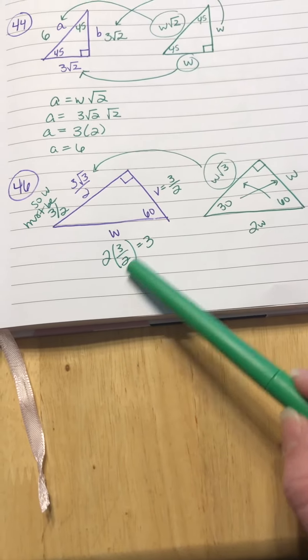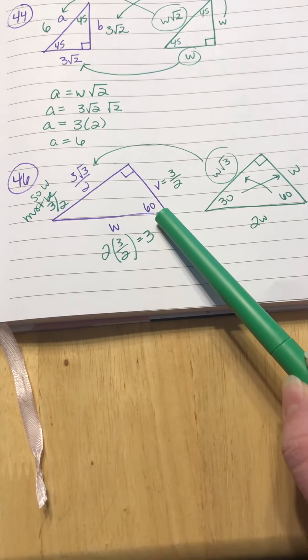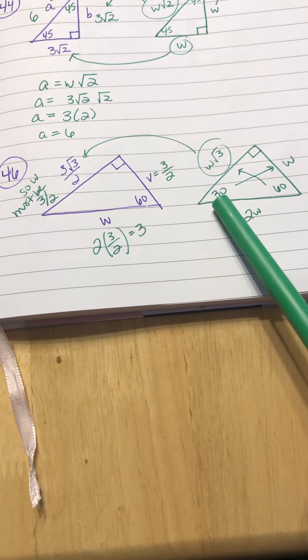Down here for number 46, you have a 30, 60, 90, because here's 60, there's 90, so 30's the missing angle.